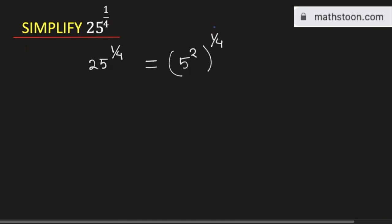Now to simplify it, we need to multiply the exponents. By doing so, this will be equal to 5 to the power 2 times 1 over 4.